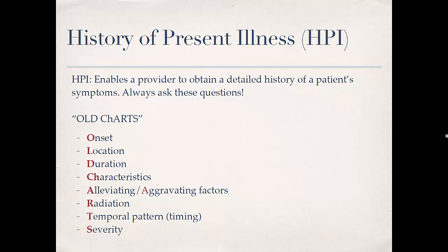Onset — when did this first start? Location — where is the pain or discomfort? Duration — how long has it been going on, does it come and go? Characteristics — ask them to describe the pain: is it sharp, shooting, burning, pressure, numbness, tingling? Sometimes you have to help them along because they don't necessarily know the words to describe their symptoms.